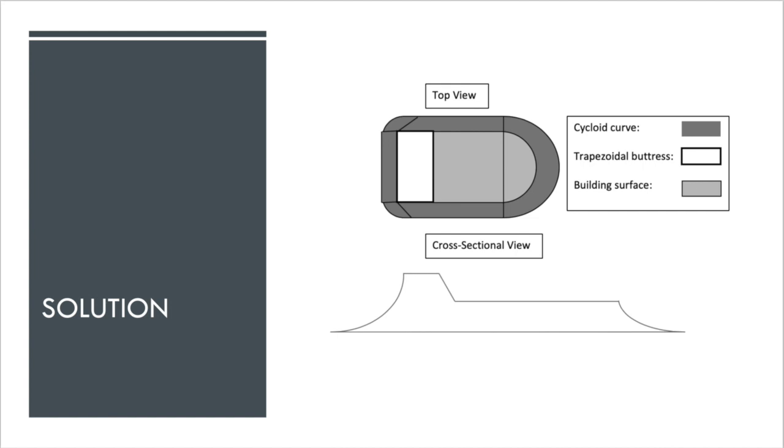As you can see here, our solution combines most of our results from our various models. In the top view, you can see the seawall that we added to block waves in white, the cycloid curves on the sides in dark gray, and the building surface in light gray. And in the cross-sectional view, you can get a sense of the heights and curves at play in our solution. I'm not sure if I mentioned it before or not, but we decided to add a seawall at the front with the same cycloid curve on one side, and a sort of trapezoidal buttress on the other. I think this is much more clearly visible in the cross-sectional view.